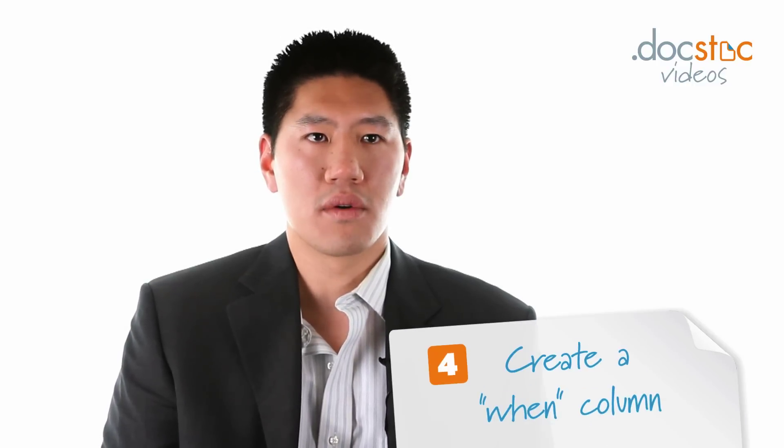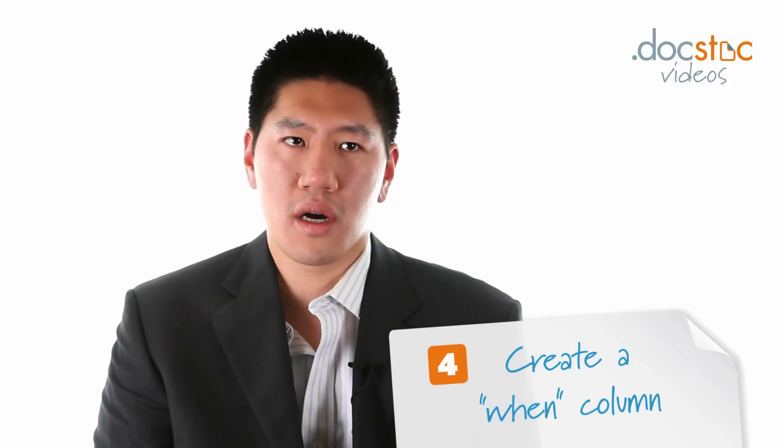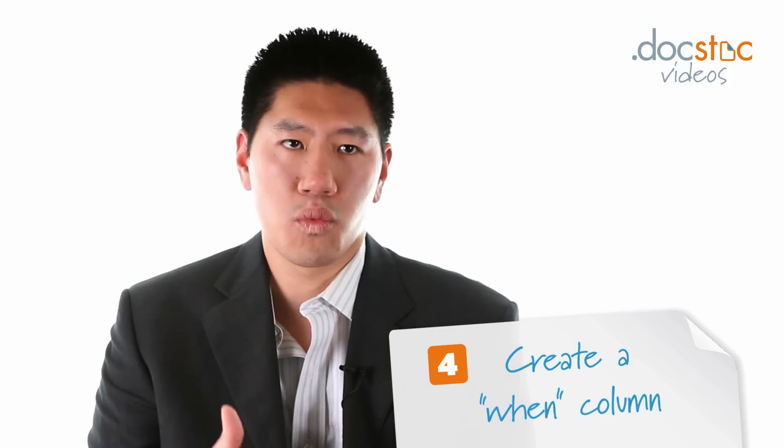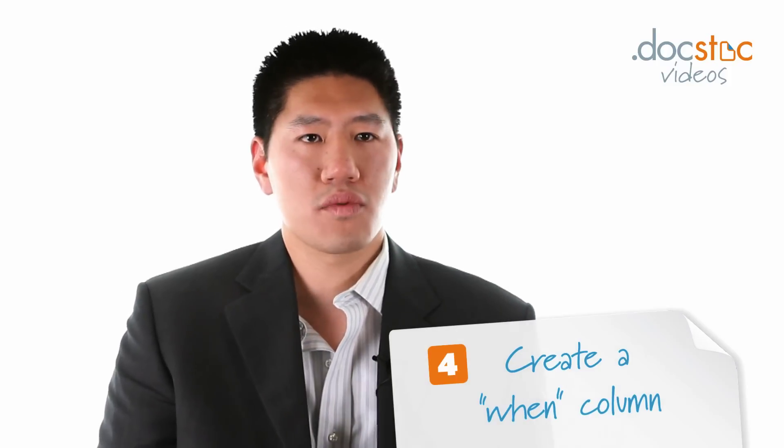The fourth step in achieving clarity as a team is determining when that particular task needs to be completed by. So you have three columns: the What column, the Who column, and then the When column. This way you're very clear on who's supposed to be doing what.